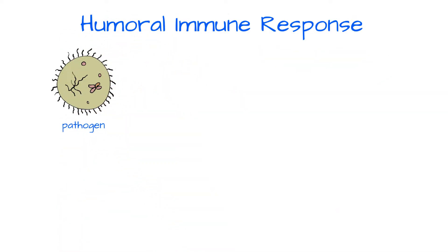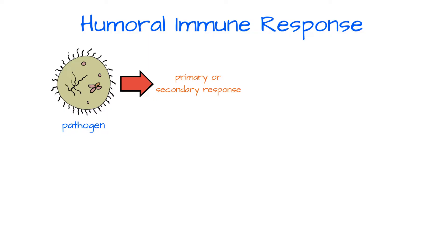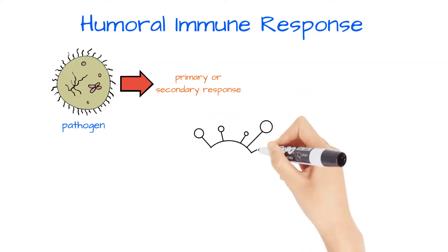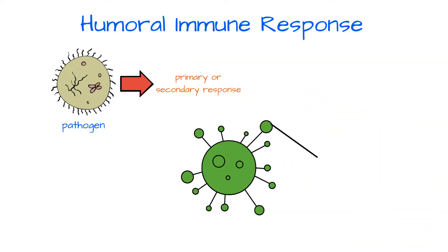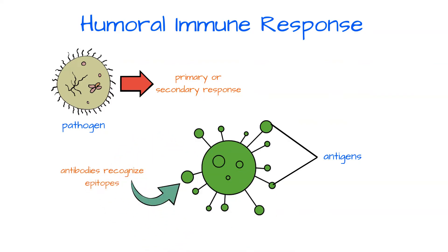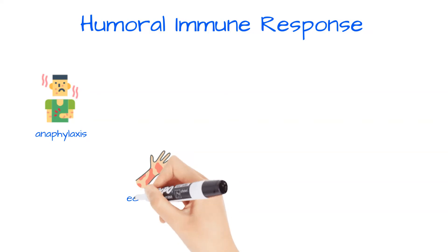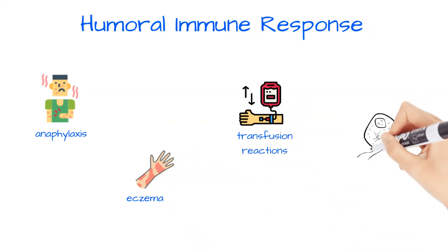Once a pathogen enters the body, either the primary or the secondary immune response would happen, as reviewed in the previous video. To elaborate further on antigen-antibody binding: when a large molecule enters the body, it usually comes with many different antigens. Antibodies recognize very specific areas on that molecule, which are called epitopes or antigenic determinants. The matching area on the antibody is called the paratope or antigen binding site. Examples of humoral immunity include anaphylactic shock, eczema, transfusion reactions, and bacterial and viral infections.